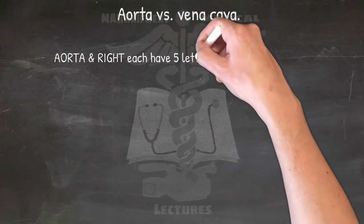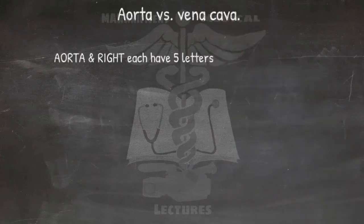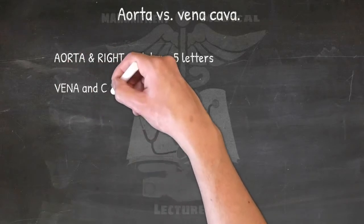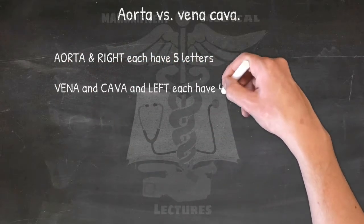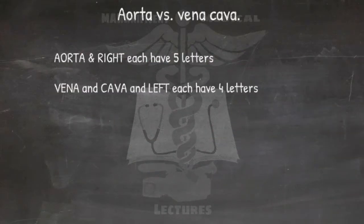Aorta and right each have five letters, so the aorta is on the right. Vena, cava, and left each have four letters, so the vena cava is on the left.